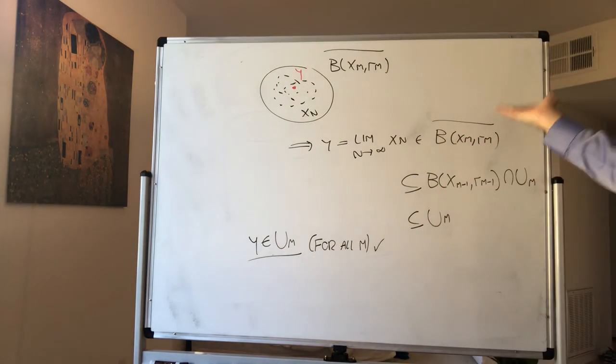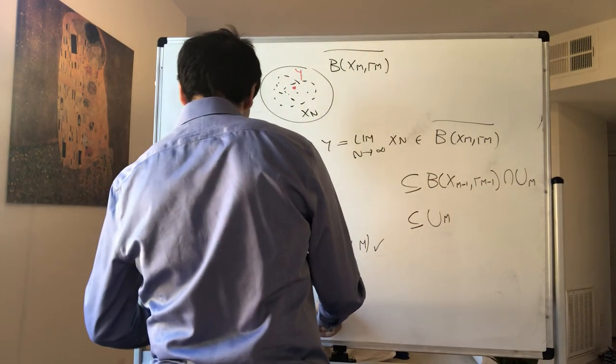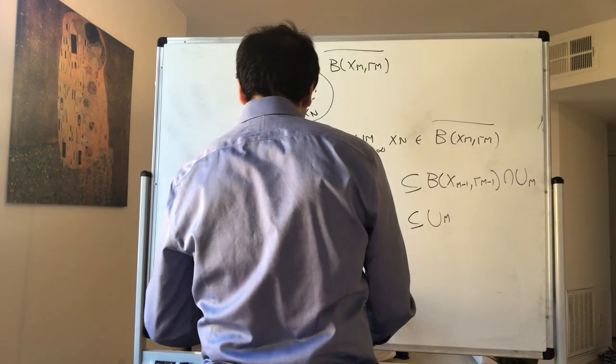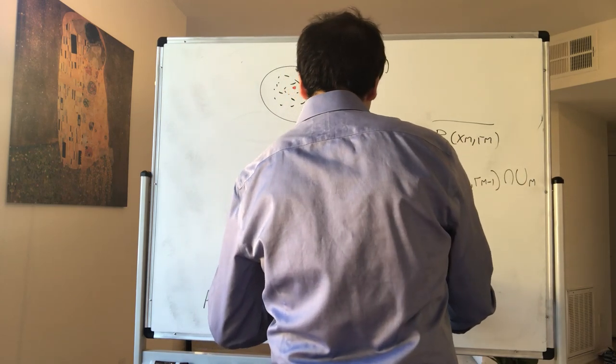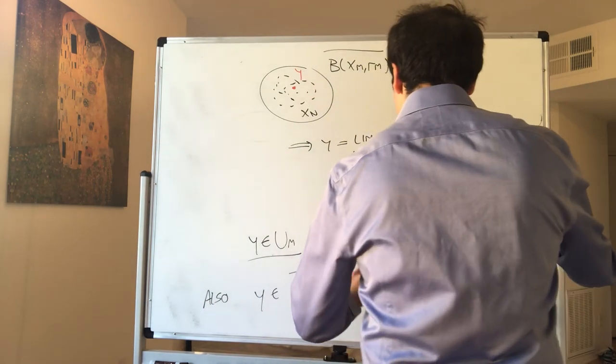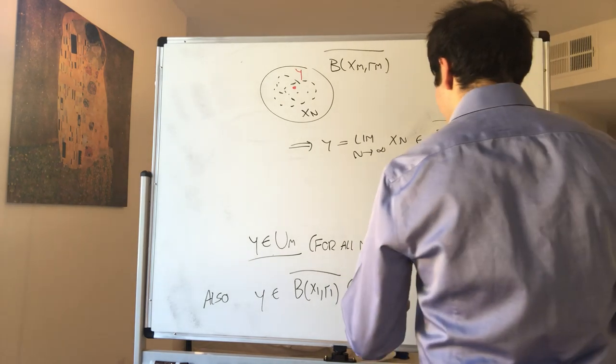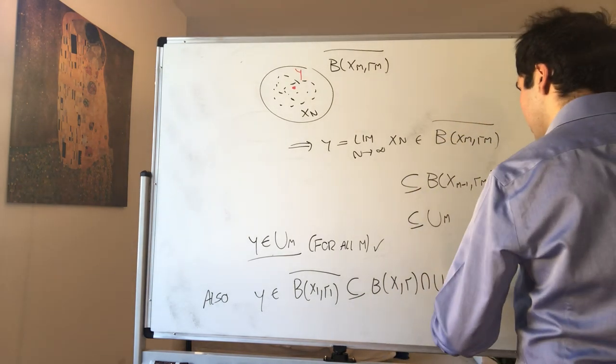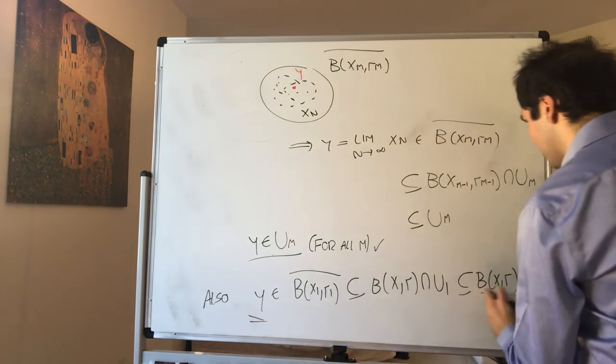And the nice thing is we can show the other thing very similarly. Also, what we know, in particular, we also know that y is in, by this thing, is in B(x1,r1) closure, but we assume that's included in B(x,r) intersect u1. But then by definition this is also a subset of B(x,r). So y is in B(x,r).